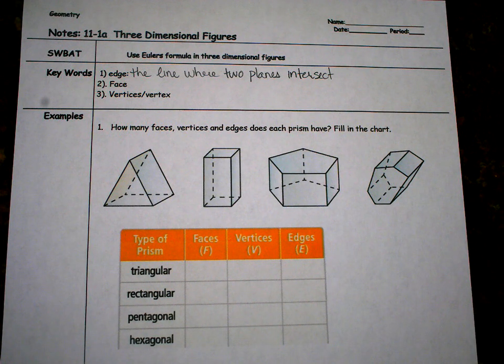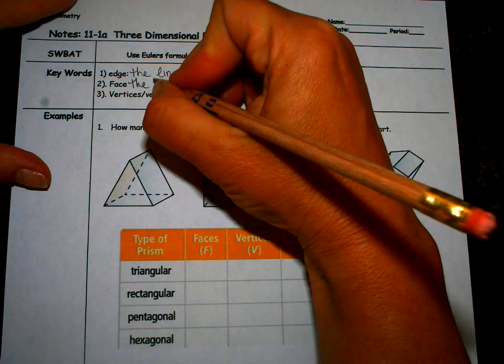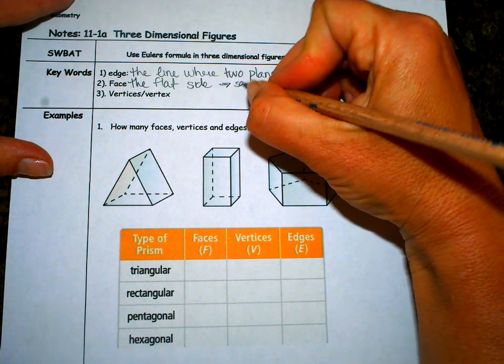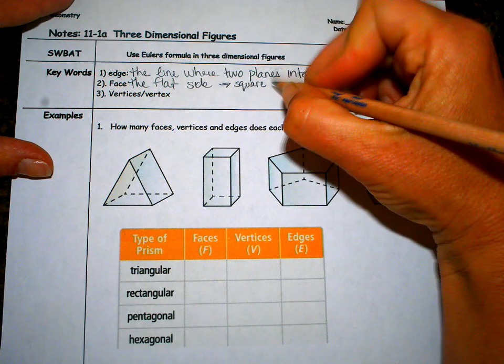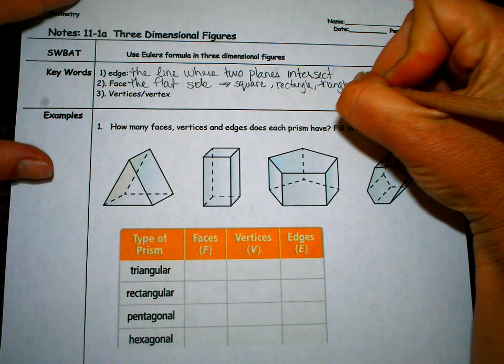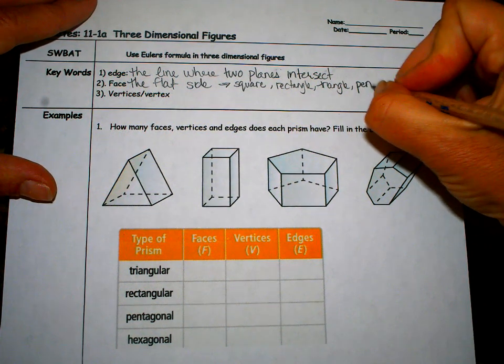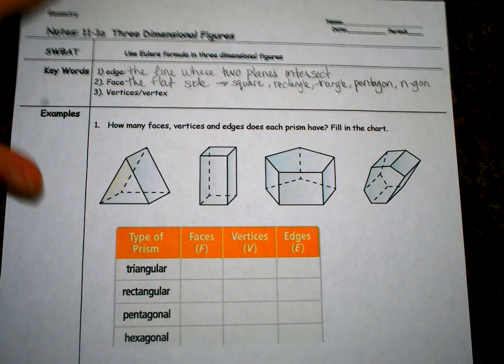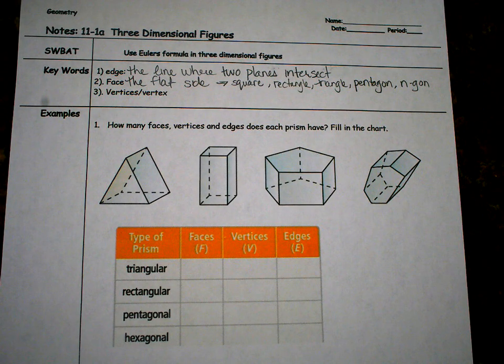The face, a face is a flat surface, like a rectangle or triangle or a square. So the face is the flat side, but it's going to be like a square on some shapes. It can be a rectangle. It can be a triangle. It could be a pentagon, hexagon. Maybe you'll have six sides. Maybe I'll create one that has seven sides. It can exist.